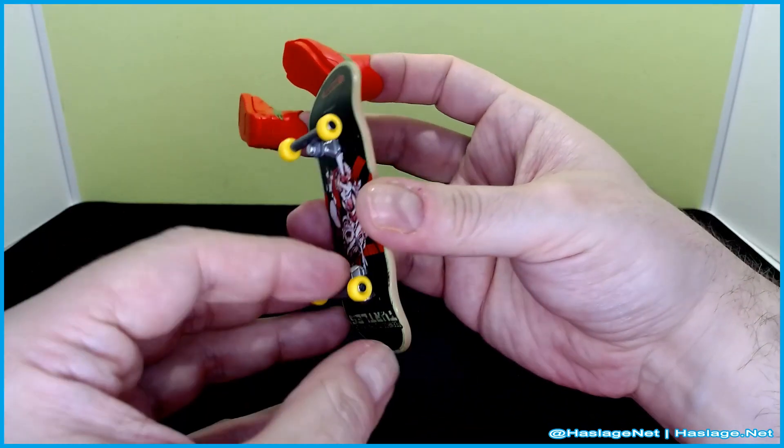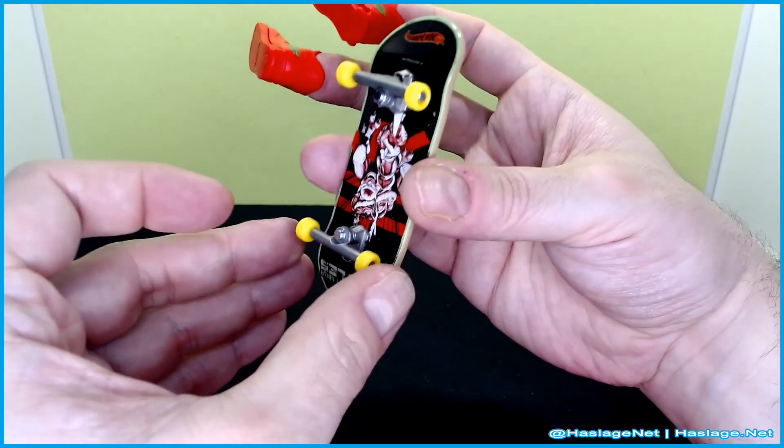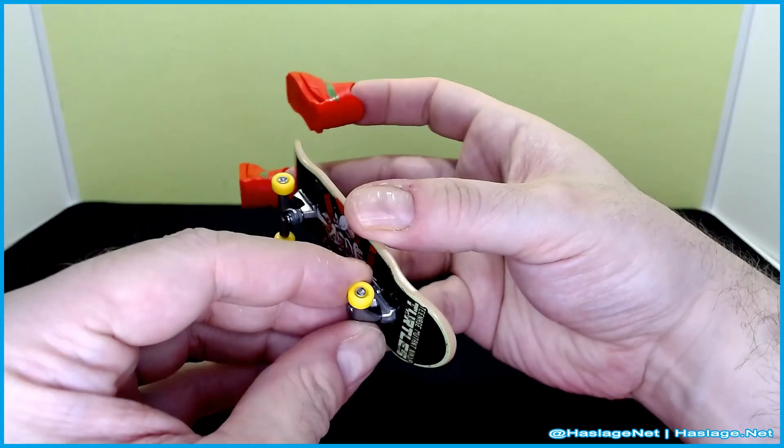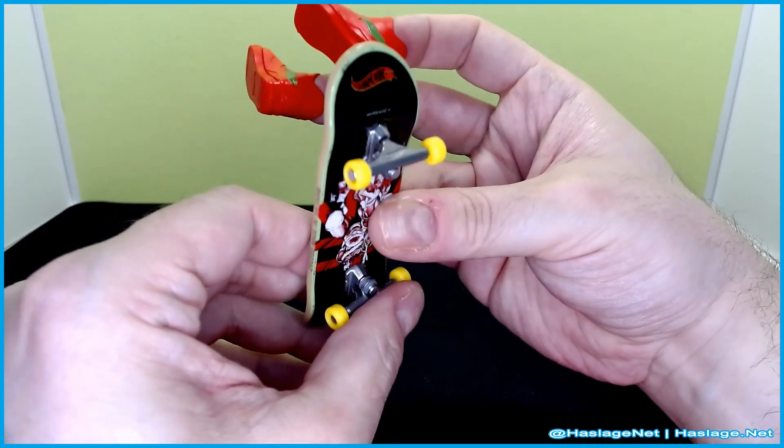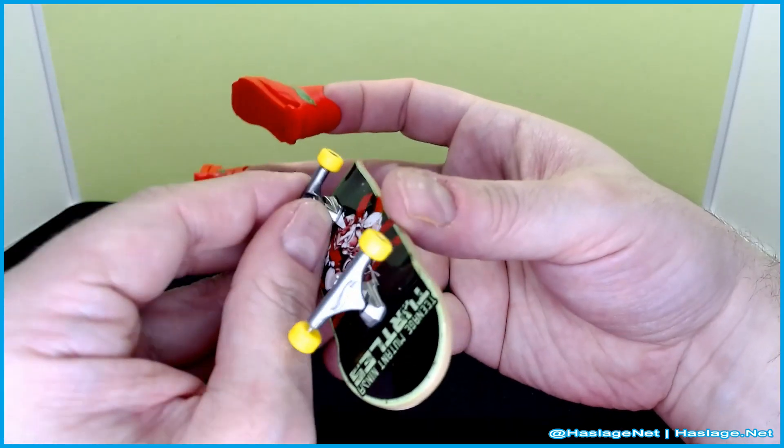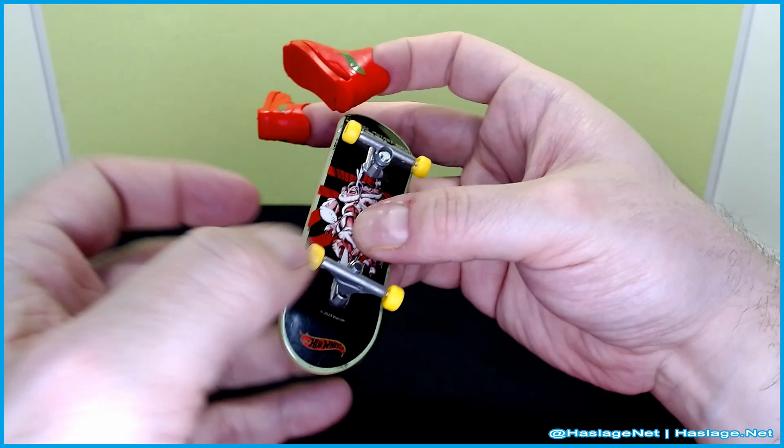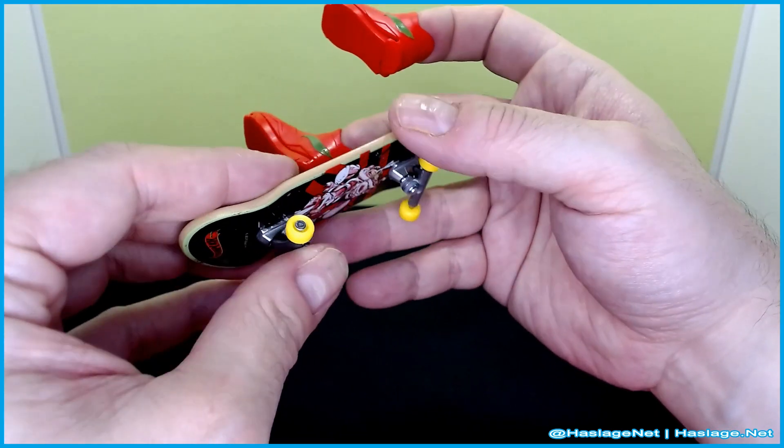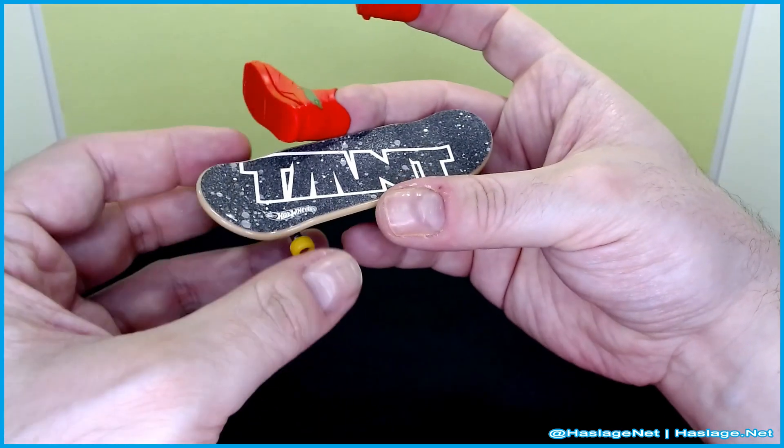I saw somebody had a kit, now this might be a different line where they were taking these apart and adjusting them. But I know there's like another line of these similar type of fidget things. But there's a lot of flexibility in here, I think there's like rubber band or something. I don't want to force it too much because I definitely don't want to break it.